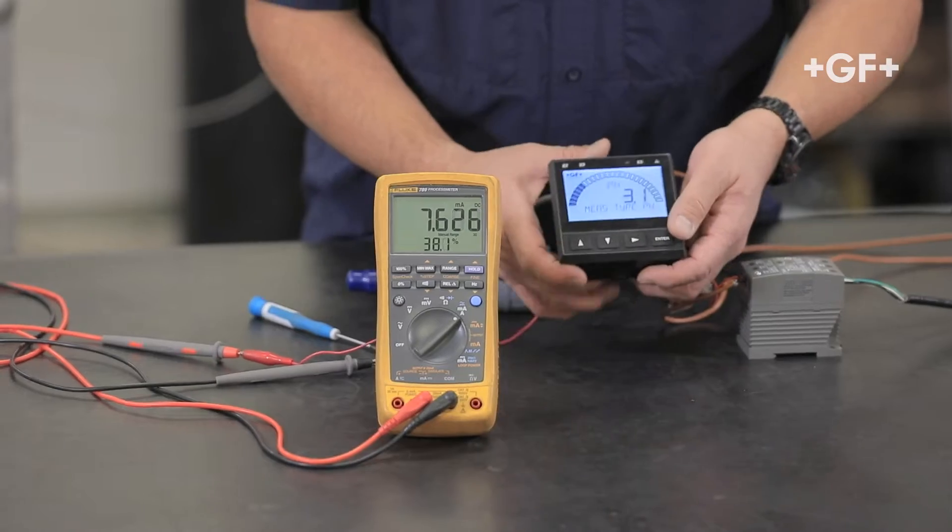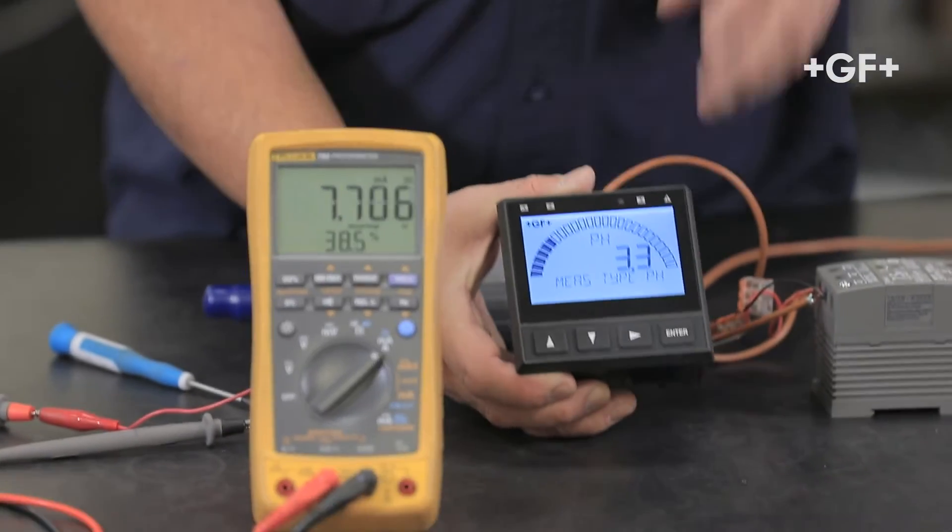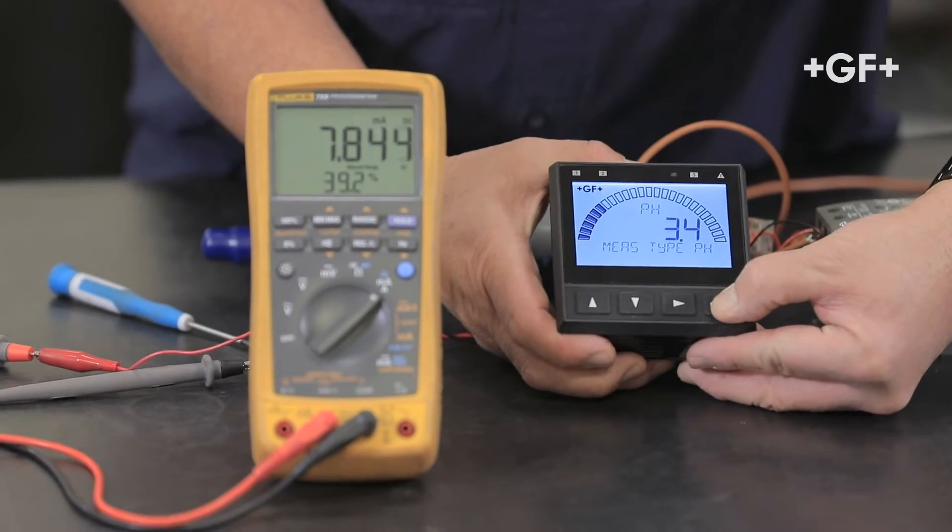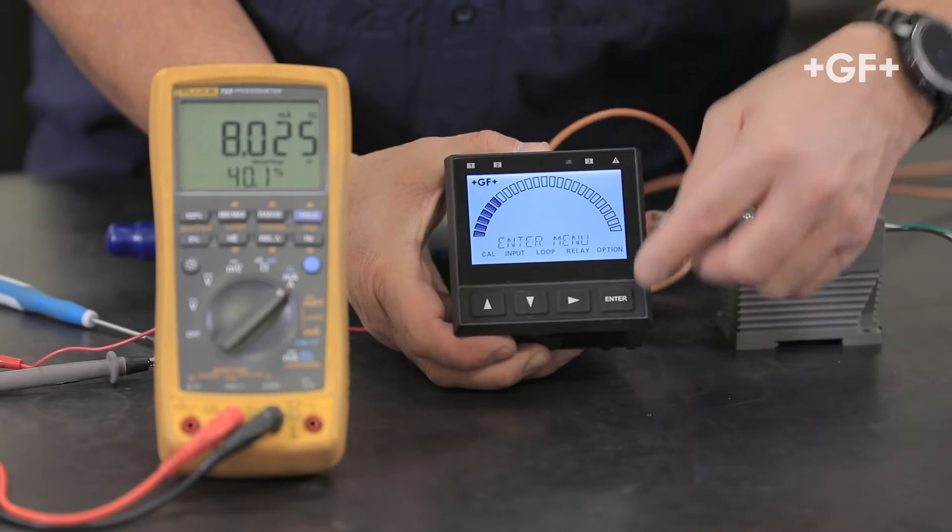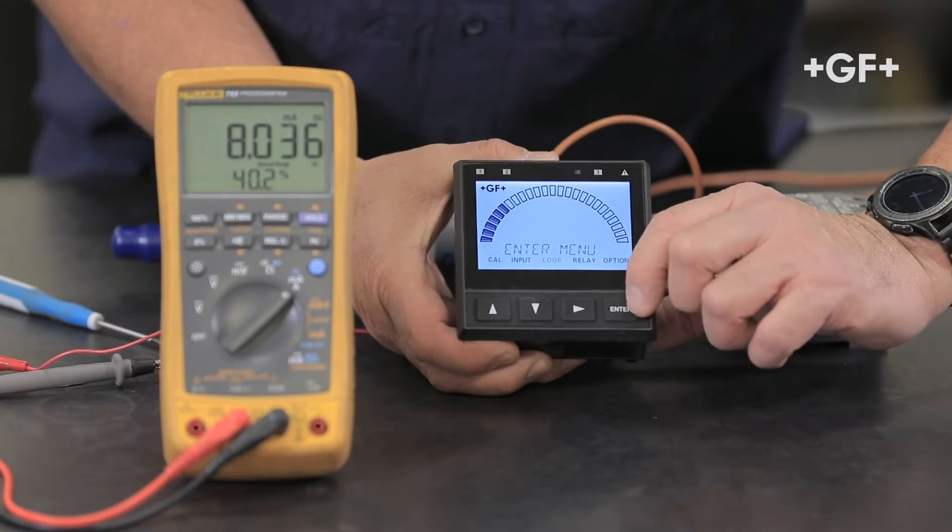Okay, and what we're going to do is scale our 4-20. So for pH the default scale will be zero to 14. Press and hold the enter button, arrow over to the loop menu, press enter.